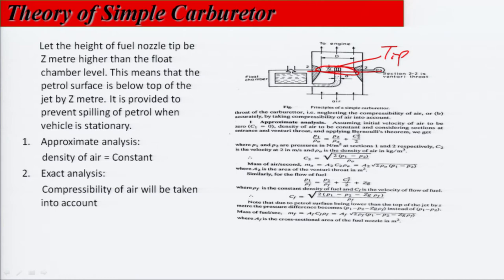The nozzle tip is kept z meters above section 2-2 to prevent spilling of petrol when the vehicle is stationary. We will evaluate the air-fuel mixture using two analyses: first is the approximate analysis, where we consider the density of air remains constant as air flows through and fuel mixes here. The amount or flow rate of air determines the depression, which controls how much fuel is released.